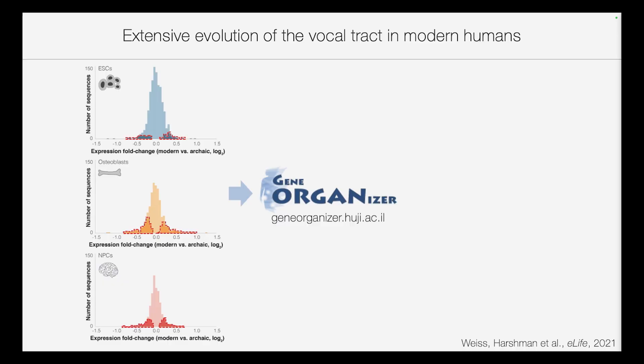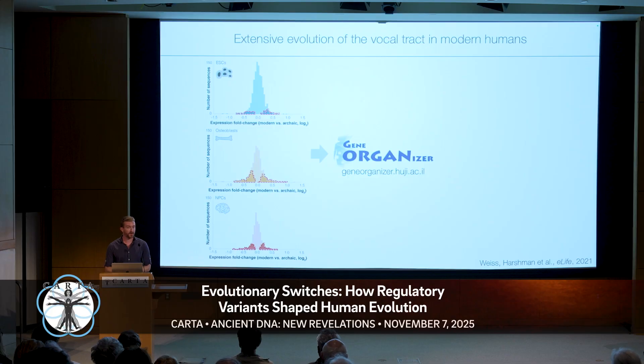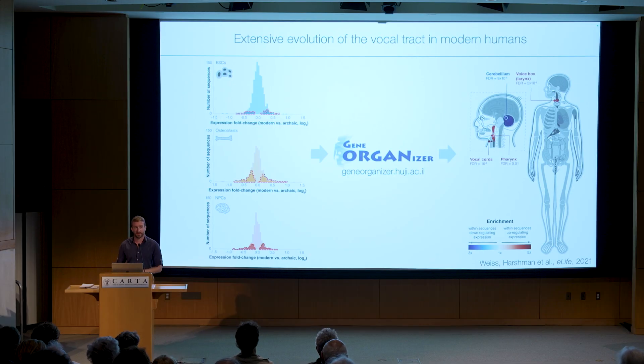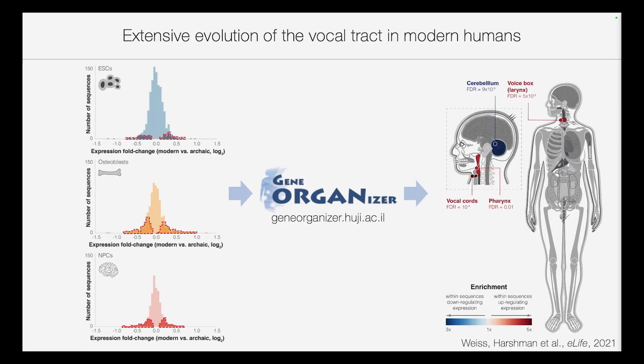Next, we wanted to see if we can say anything phenotypic about these variants — what is their effect on traits? To do this, we use a tool called Gene Organizer, which links genes to the organs they affect based on the diseases they are known to underlie, outputting a heat map showing which organs are represented more than you would expect by chance. When we run Gene Organizer on the 14,000 variants unique to modern humans, we get a heat map showing that variants which down-regulate expression are most enriched for the cerebellum.